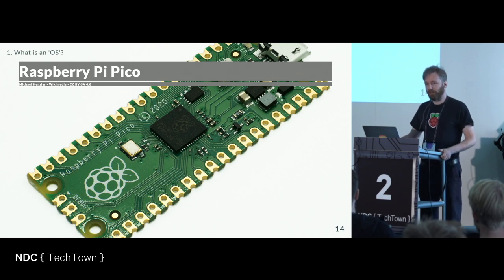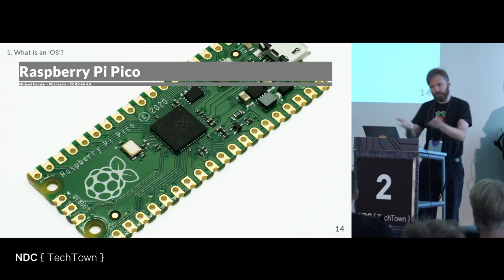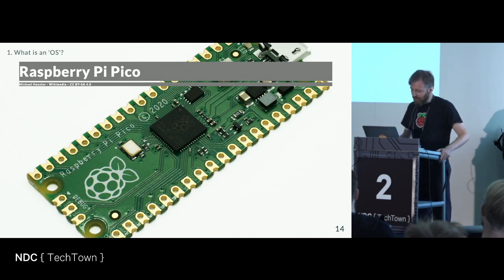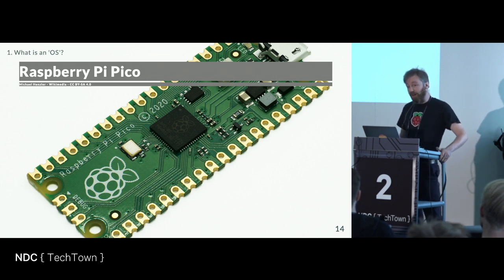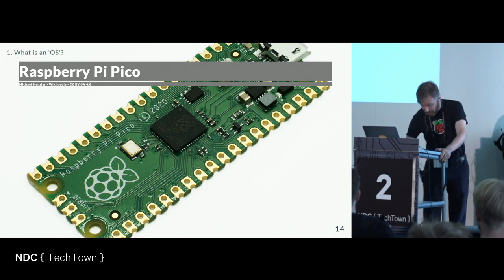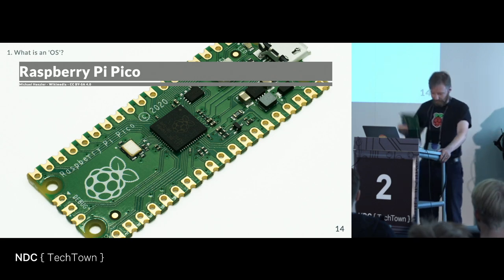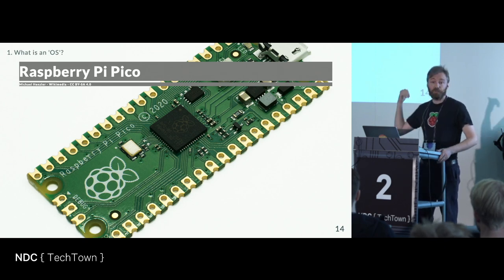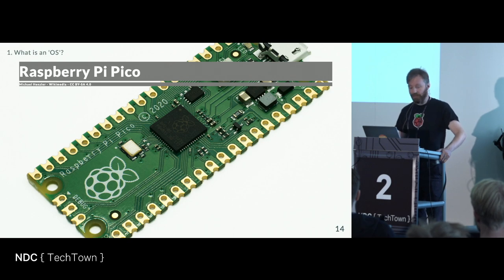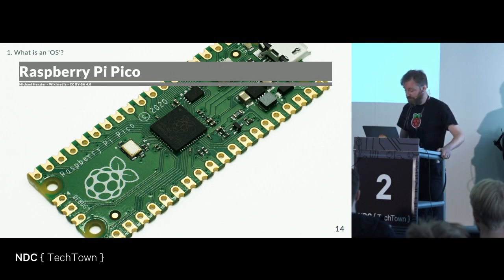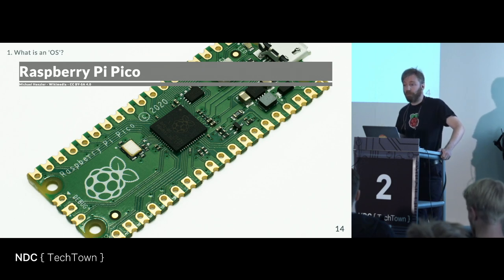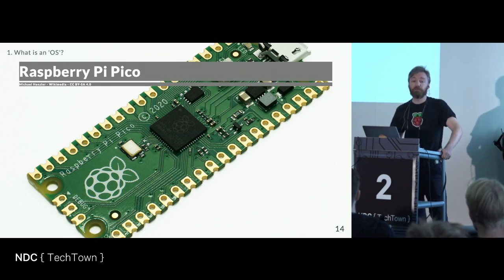Is this a computer? It's got a processor and some memory, but it's a bit light on I/O — it depends what you plug into it. But you can turn it into a computer, probably by making a circuit board to plug it into. It is of course so much faster than the IBM PC: 256K RAM, two megabytes of flash storage, two processors running at 133 MHz in 32-bit — and the whole board costs four dollars. The main processor chip costs 75 cents.